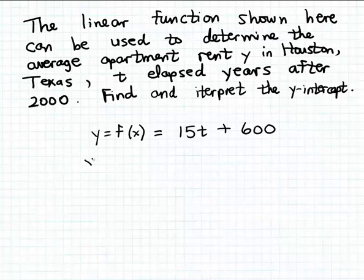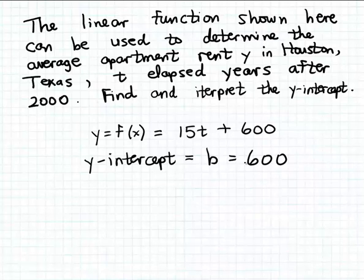So that tells us that the y-intercept of this line, usually denoted by the letter B, is equal to 600. The y-intercept has an important geometric interpretation: it's where the graph of a linear function crosses the y-axis. But it usually also has useful practical interpretations as well, and that's what we want to explore in this example.